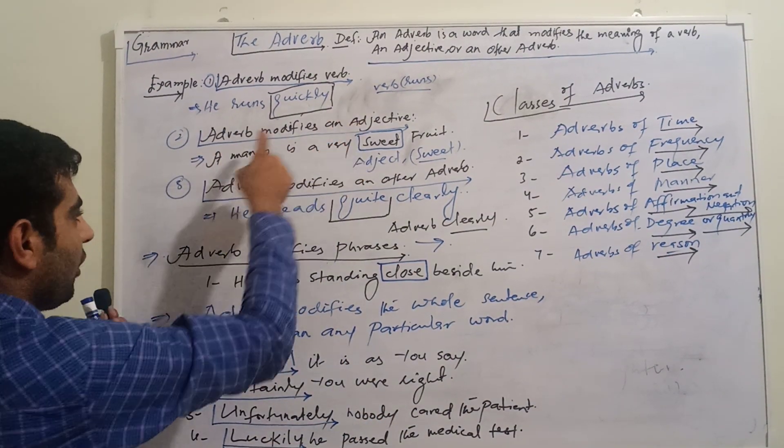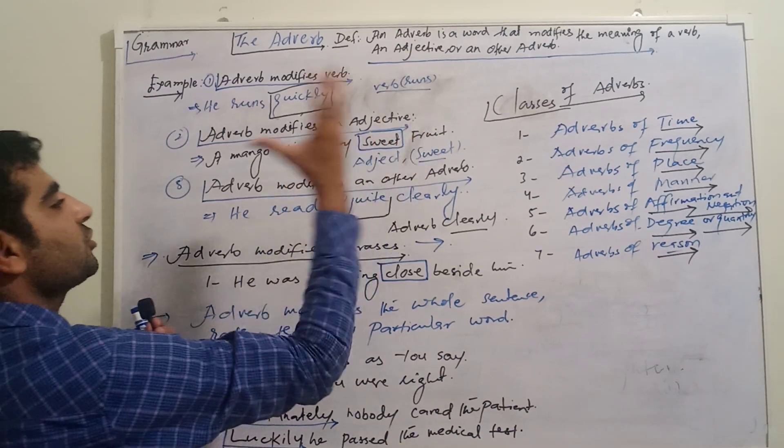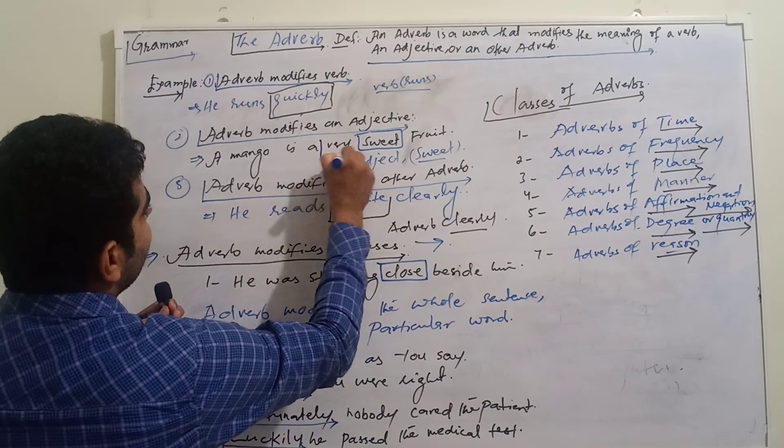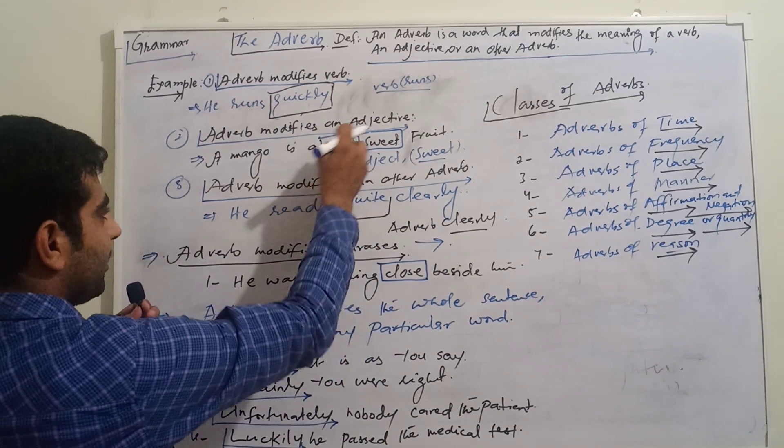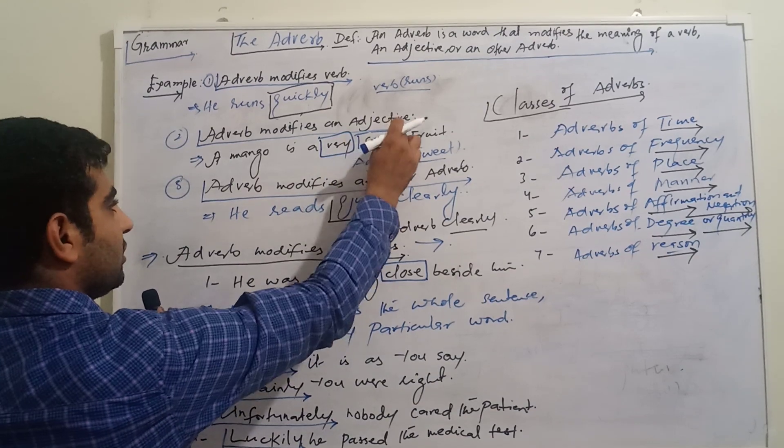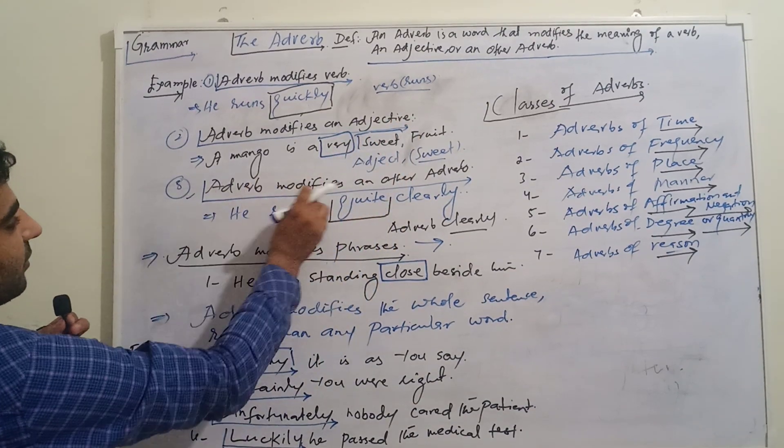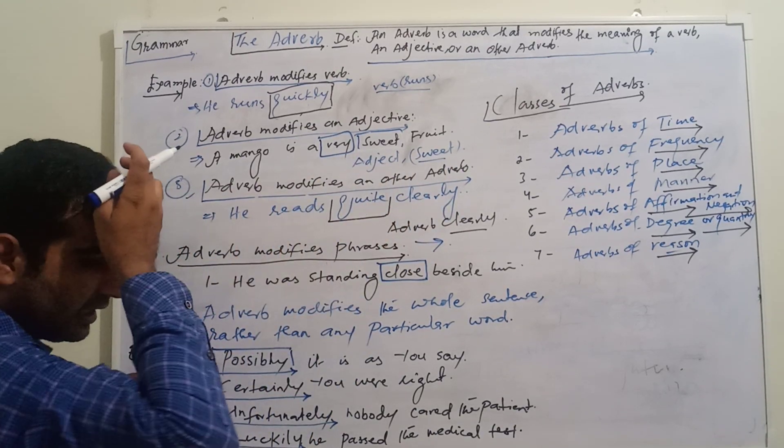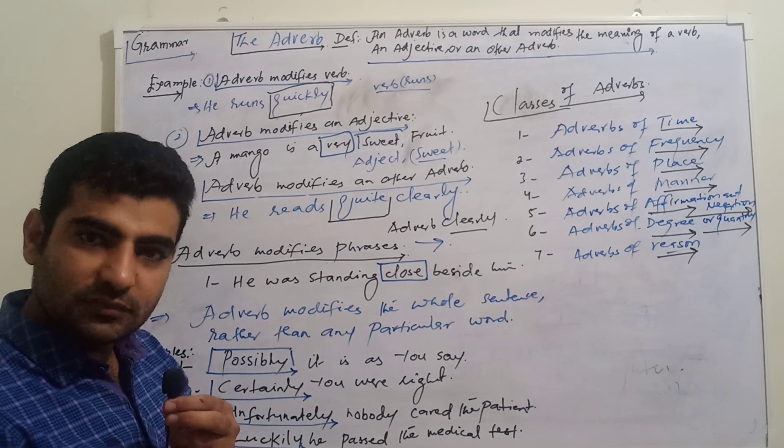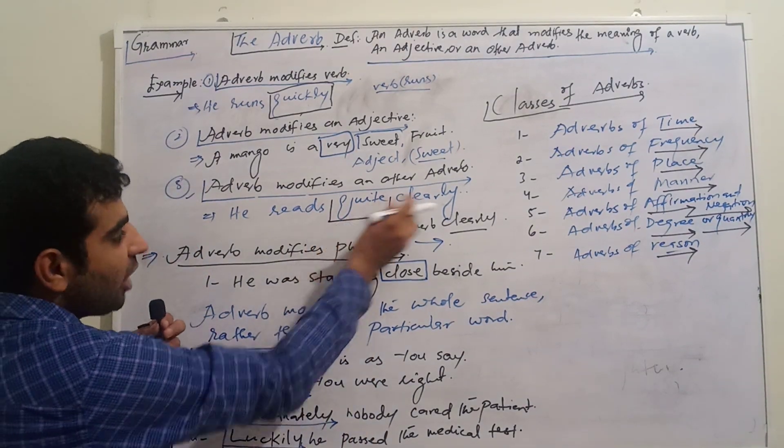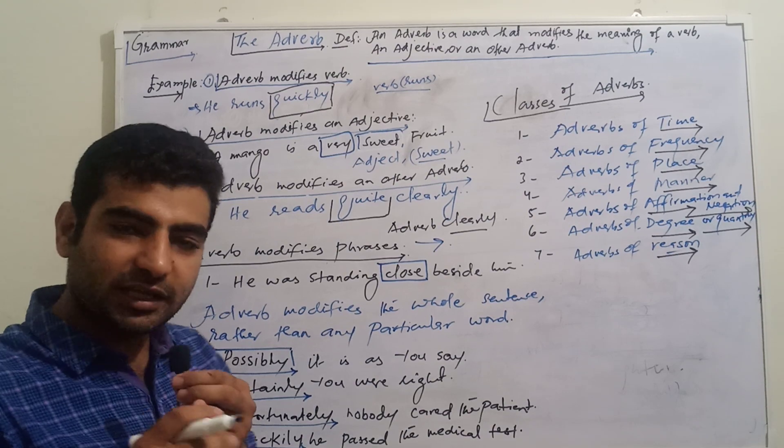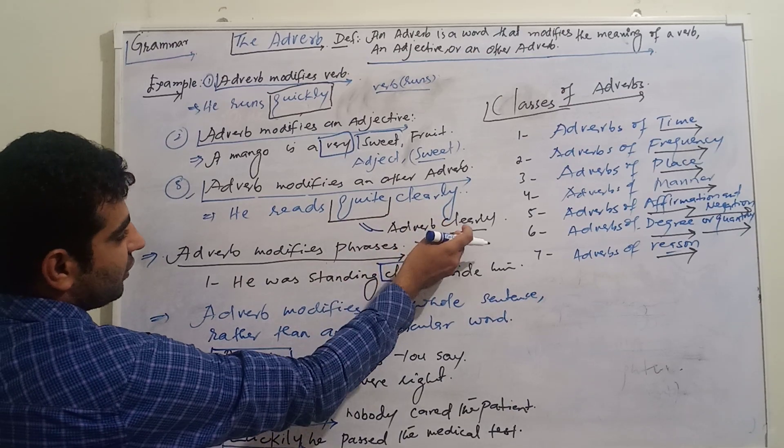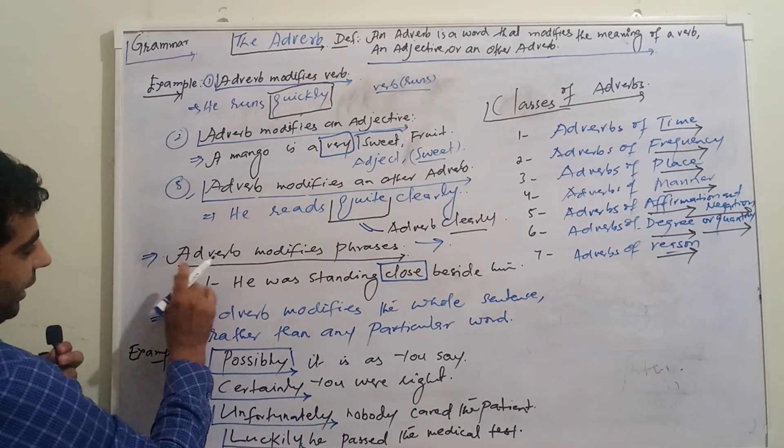Adverb modifies adjective - how? A mango is a very sweet fruit. 'Very' is an adverb used for 'sweet'. Adverb modifies another adverb: how? He reads quite clearly. If he says he reads clearly, that's fine, but he reads quite clearly. 'Quite' is also an adverb modifying the adverb 'clearly'.